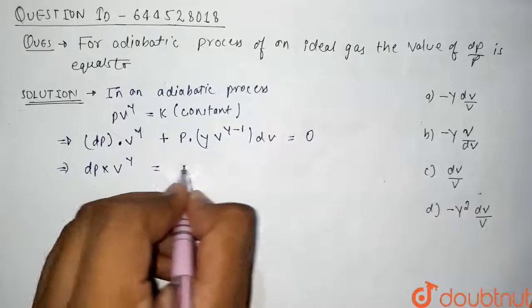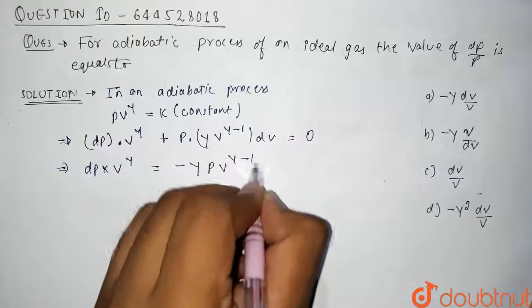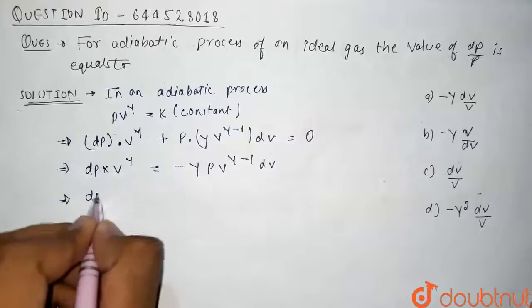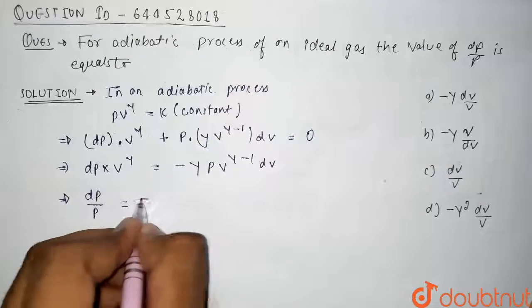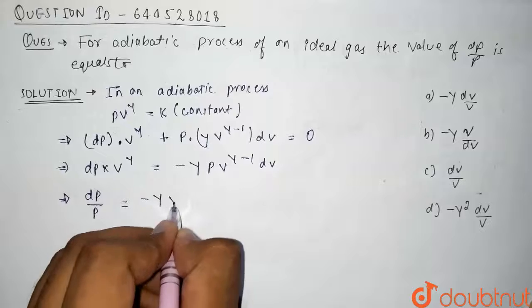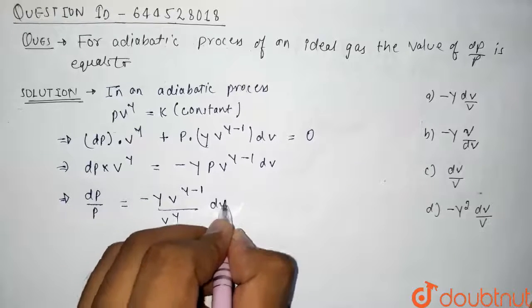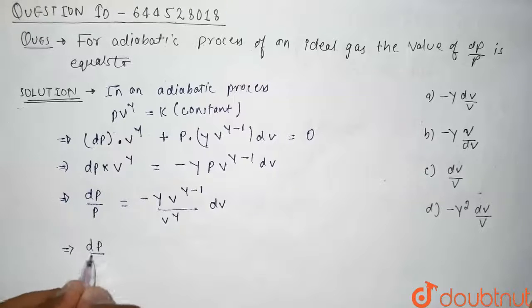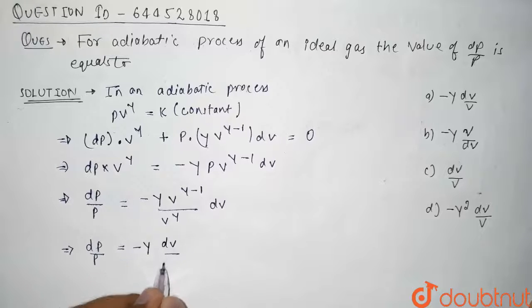So from here, dP into V to the power γ is equals to minus γ times P V to the power γ minus 1 dV. So after rearranging, it comes out to be dP/P, the value of dP/P comes out to be minus γ times dV/V.